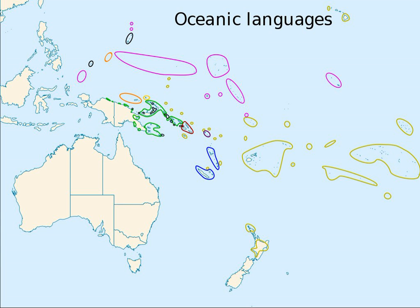Finally, immigrants brought their own languages, such as Mandarin, Italian, Arabic, Cantonese, Greek and others in Australia, or Fiji Hindi in Fiji.